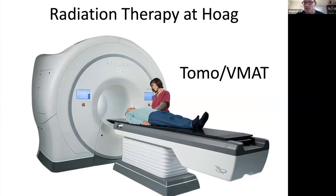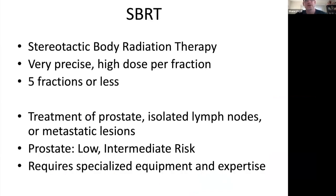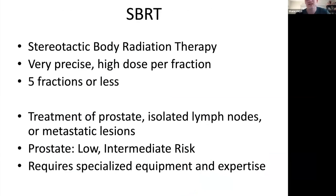At Hoag, we have something called tomotherapy, essentially a type of VMAT that delivers very precise, conformal radiation therapy to patients. SBRT — stereotactic body radiation therapy — refers to very precise, high-dose-per-fraction radiation that can treat not just the prostate but anywhere in the body: the brain, lung, abdomen, lymph nodes. For treating just the prostate, SBRT is currently reserved for low- or intermediate-risk disease, with high-risk as an exception for extenuating circumstances. It can also be used to treat other sites in the pelvis and lymph nodes.